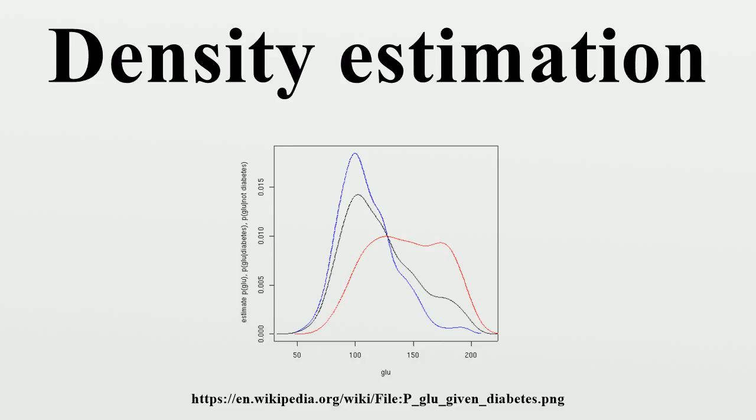The third figure uses optimal smoothing via the method of Hall, Racine, and Li, indicating that the unconditional density bandwidth used in the second figure above yields a conditional density estimate that may be somewhat under-smoothed.